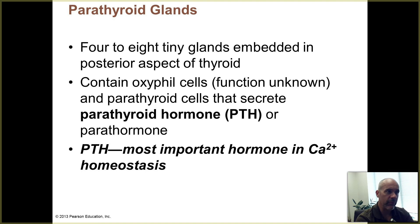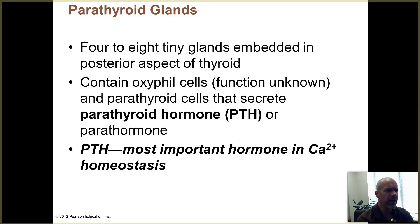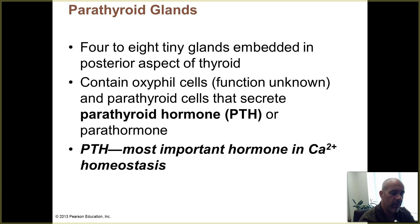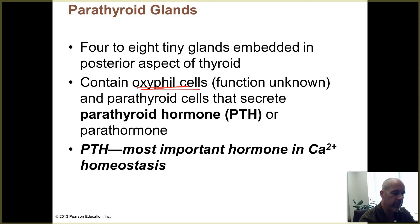The number of parathyroid glands can vary from person to person. Usually on diagrams they show four, but some people may have three, or it can be four to eight — some people have as many as eight. They've got a couple of different kinds of cells inside them that look different under the microscope when they've been dyed. One type are called oxyphil cells, and it's still not known why those cells are in the parathyroid glands or what they're doing.